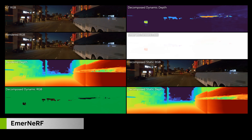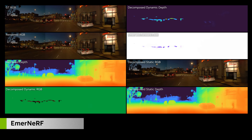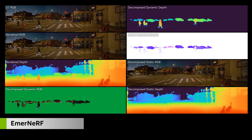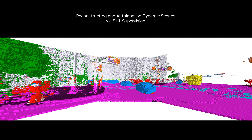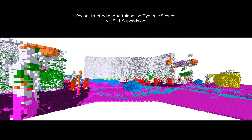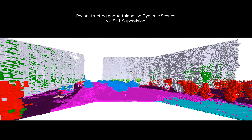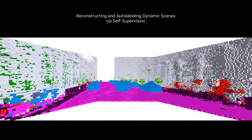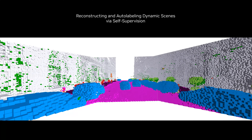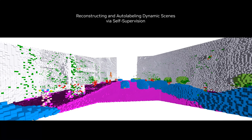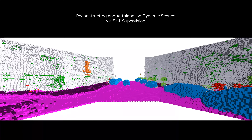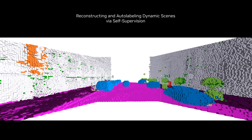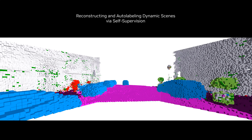In this episode of DriveLabs, we introduce EmerNeRF, a new neural radiance field-based method. This approach builds upon NeRF, which uses many 2D images to reconstruct 3D scenes, and extends it with self-supervised learning to accurately reconstruct dynamic scenarios and obtain labels for dynamic scenarios at scale.